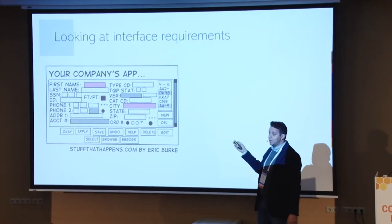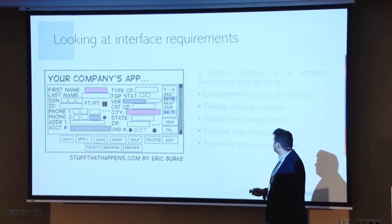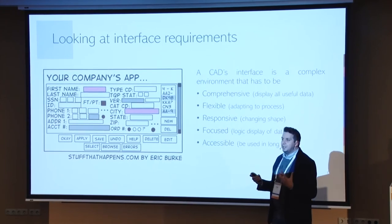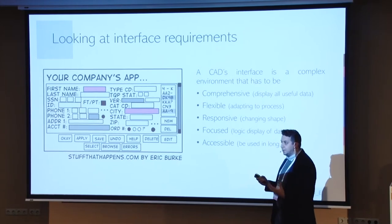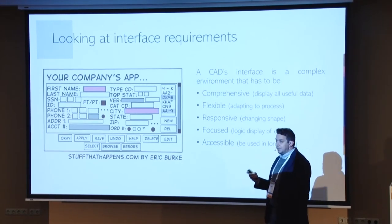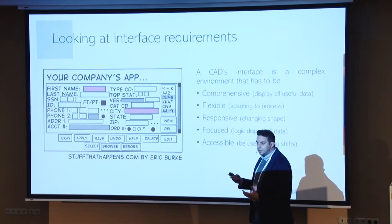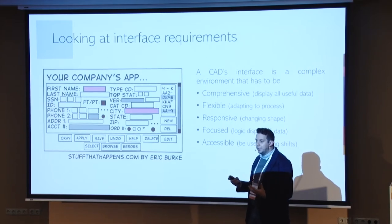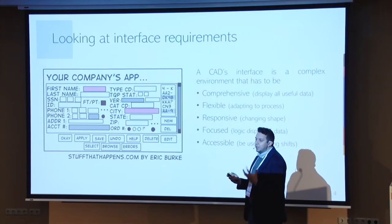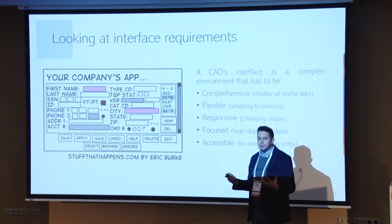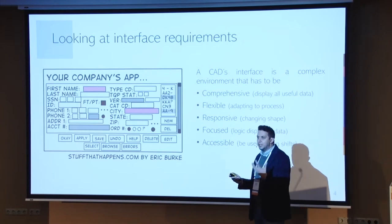Starting from what we expect — what our customers expect — we identified the points that best express the needs when creating a user interface for a computer-aided dispatch. First: comprehensive. The application must display all the data that are needed. We cannot remove fields or reorganize screens by removing data. All the information available in our computer-aided dispatch is necessary, and the UI must give the ability to fill all information needed for the call taker and dispatcher to perform their actions.